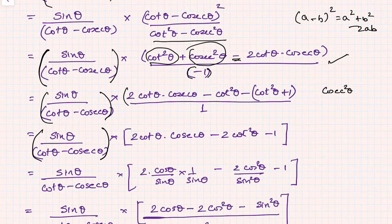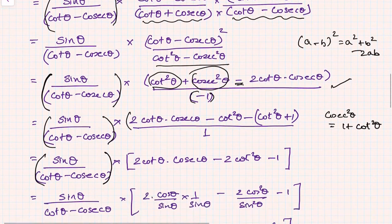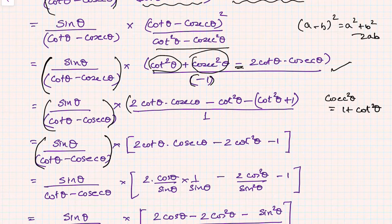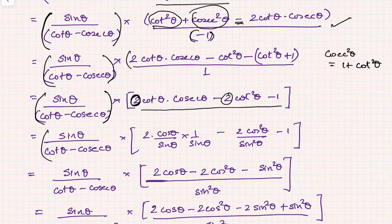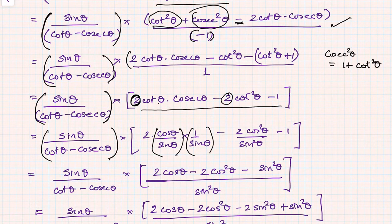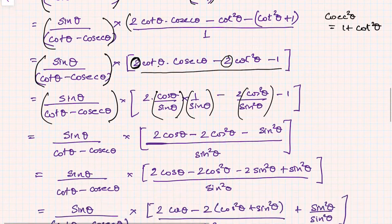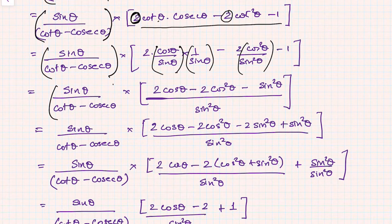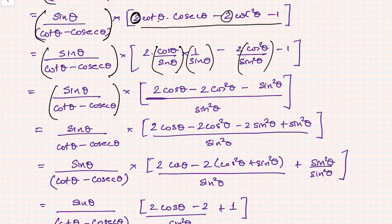Using cosec²θ = 1 + cot²θ, after simplification the remaining expression reduces to 2 — since I need the factor 2 which appears in the RHS. Writing cot as cos/sin and cosec as 1/sin, I get (2 cos θ/sin θ - 2 cos²θ/sin²θ - 1). Taking LCM as sin²θ, the numerator becomes 2 cos θ sin θ - 2 cos²θ - sin²θ.